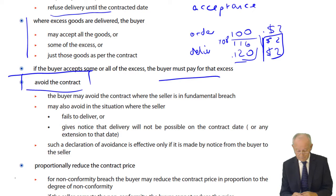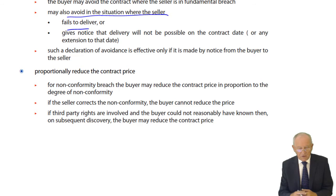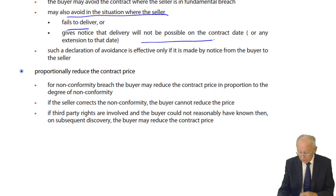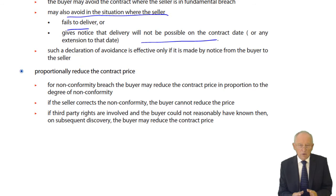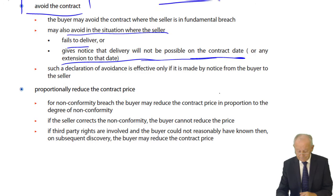The buyer can also avoid where the seller fails to deliver — surely that's fundamental. Or the buyer gets notice that delivery will not be possible on the contract date or any extension, because the goods have been destroyed or the seller is no longer in business. In that situation the contract is frustrated. Such a declaration of avoidance is effective only if made by notice from the buyer to the seller. The contract is over, but the buyer may still claim damages.